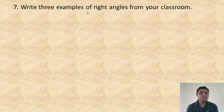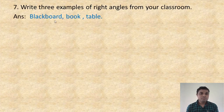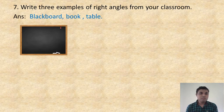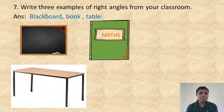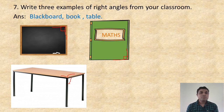Question number 7: write three examples of right angles from your classroom. So: blackboard, book, table. You can see the blackboard — can you find the right angle? Yes, this is a right angle. Similarly for a book, you can tell that this is in a right angle form. And for a table, just see — from this edge to this edge is a right angle. You can give other examples also, no problem.